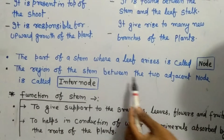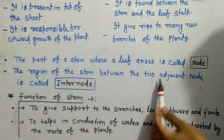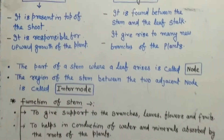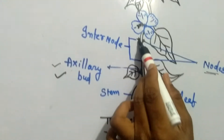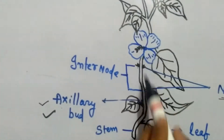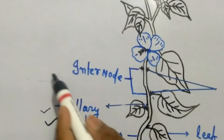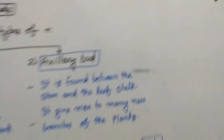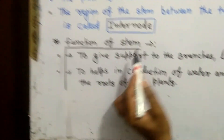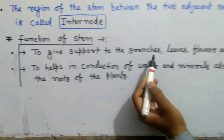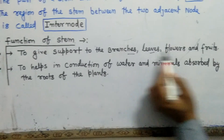The region of the stem between two adjacent nodes is called an internode. Here in the figure, the region between these two nodes is called the internode.